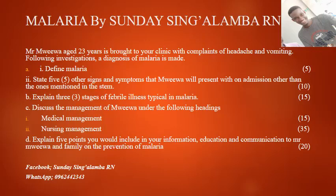Other than headache and vomiting, we have: fever, which occurs as a result of the presence of parasites in the blood; joint pains, which occur as a result of ischemia; general body malaise, which occurs as a result of tissue hypoxia; sweating, which occurs as a result of elevated body temperature; and dehydration, which occurs as a result of fever accompanied by sweating.